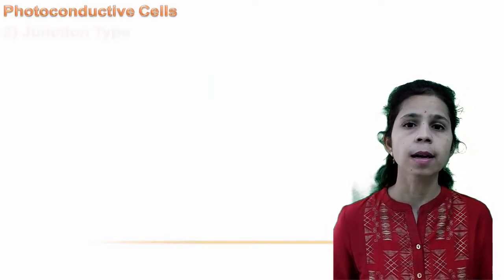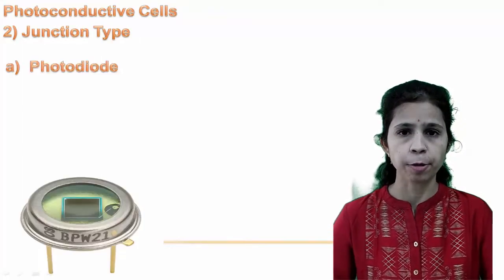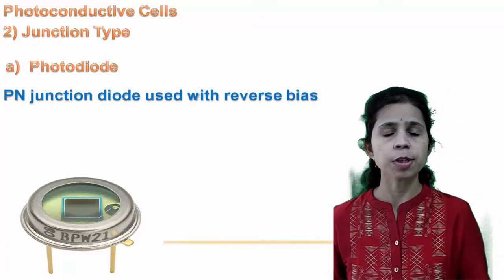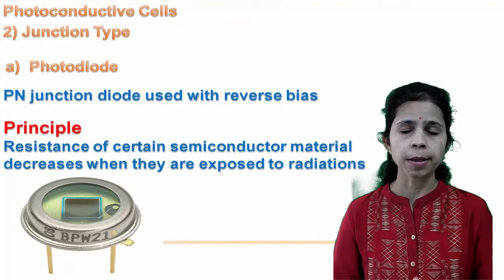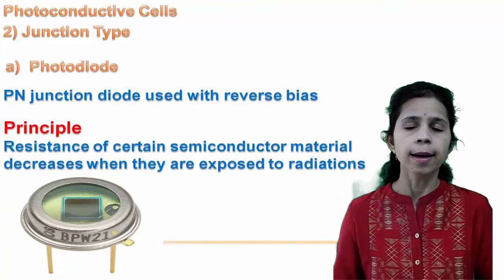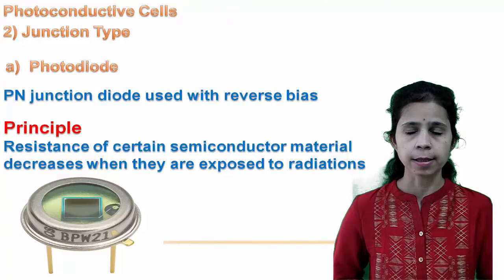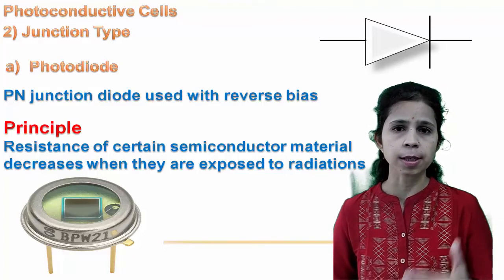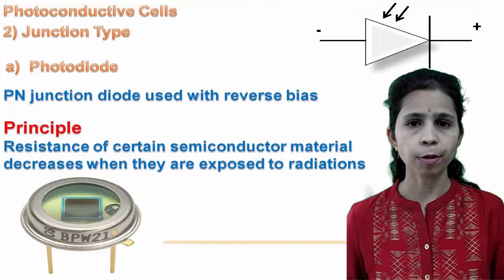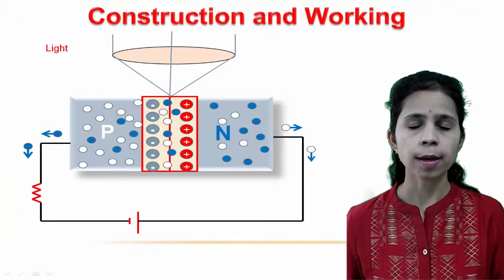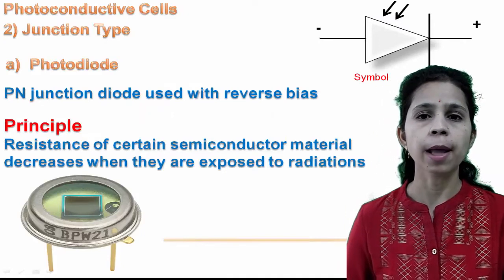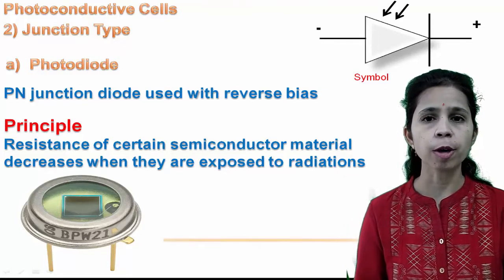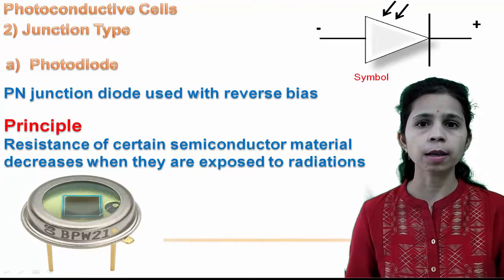The second type of photoconductive device is the junction type, starting with the photodiode. A photodiode is a PN junction diode with reverse bias, based on the same principle as photoconductive cells — when the PN junction is exposed to radiation, its resistance decreases and current increases. The symbol is similar to a normal diode but with incident light arrows. A glass lens in the cap unit allows maximum light to focus on the reverse biased junction.